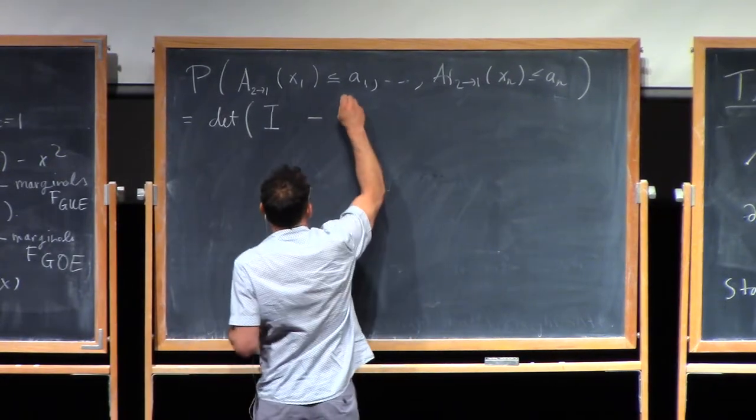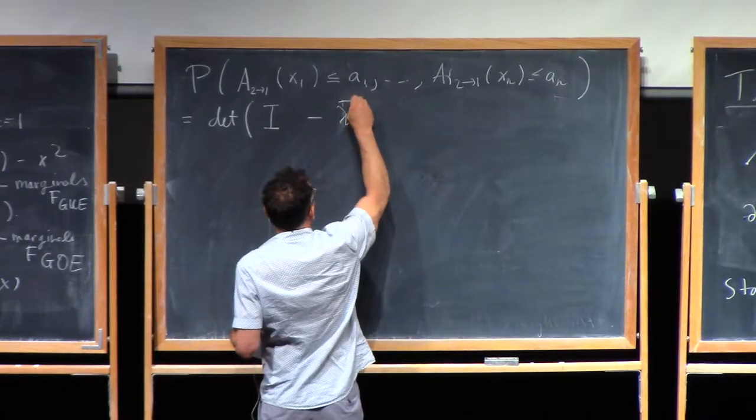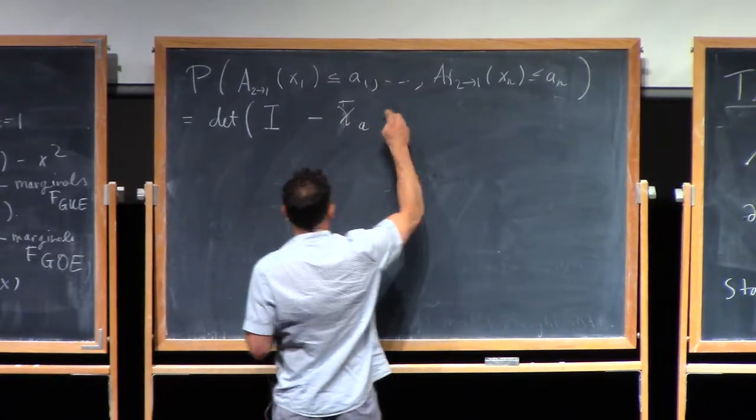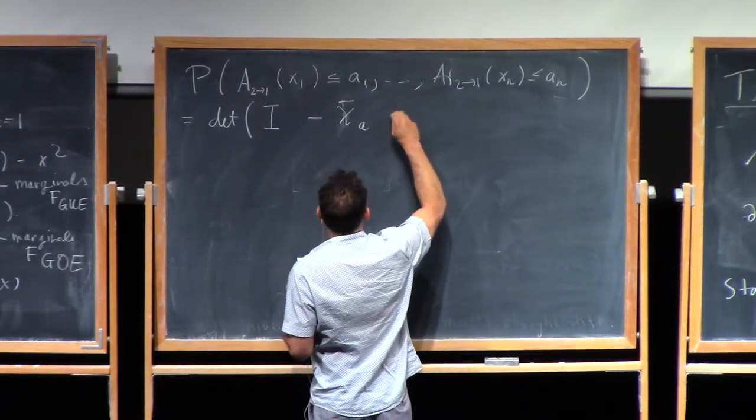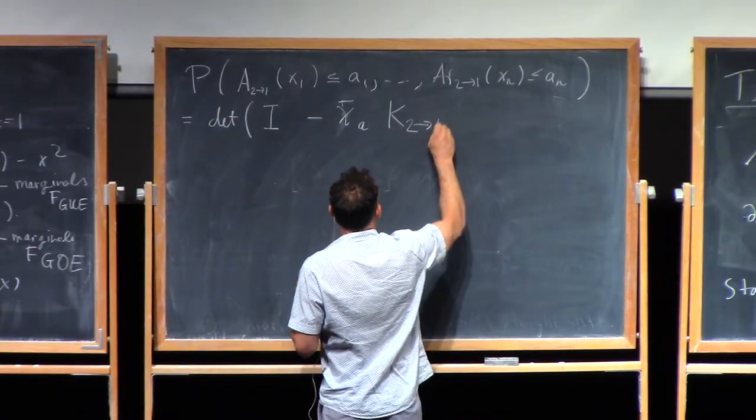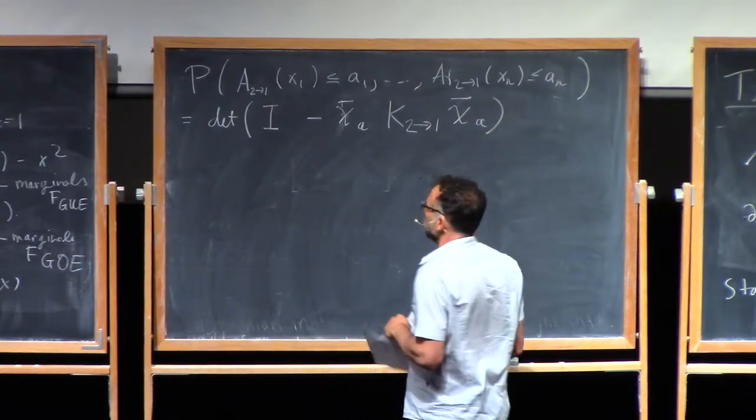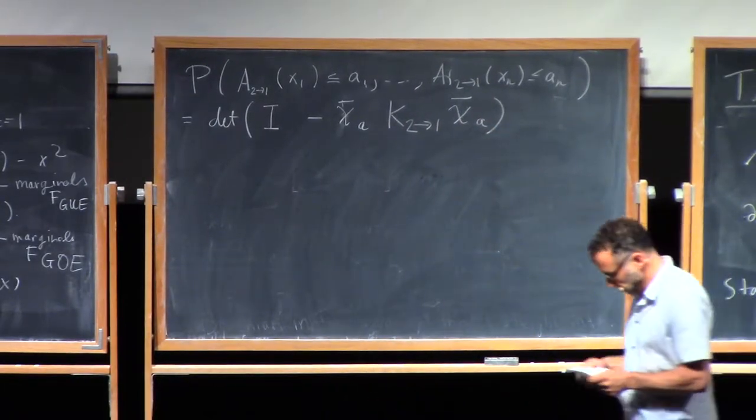Chi minus a special kernel, oh sorry, I need a chi bar A, K_{2,1}, chi bar A. It takes a sec to write this thing.